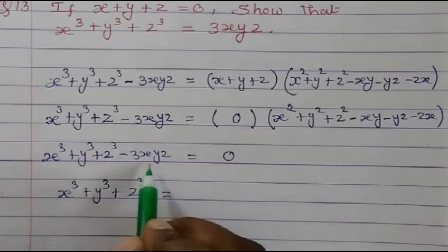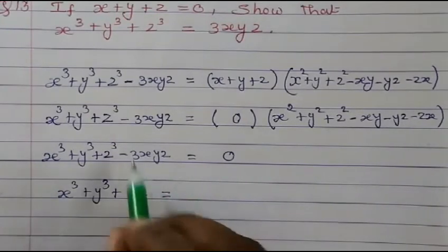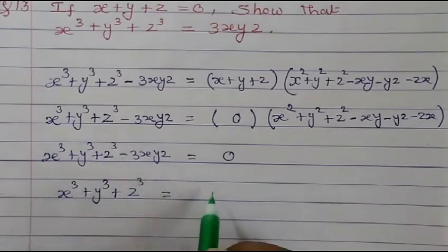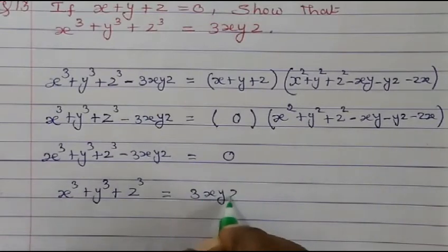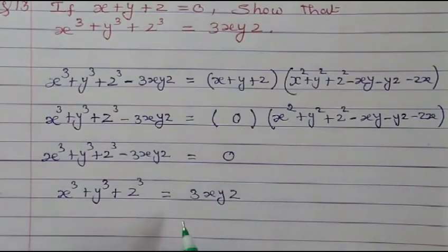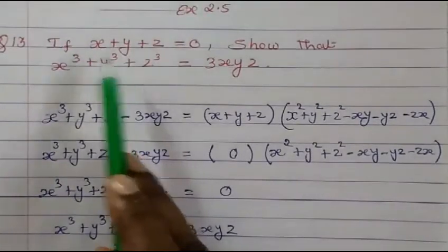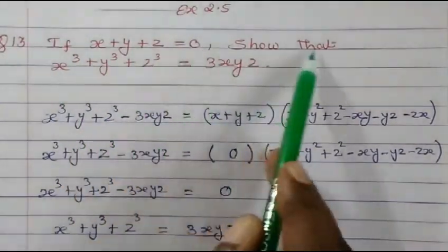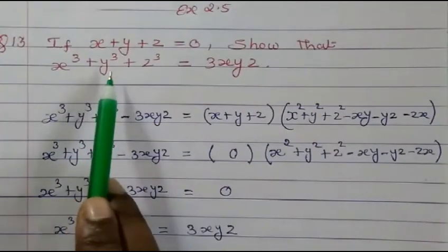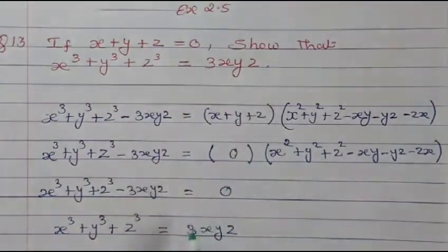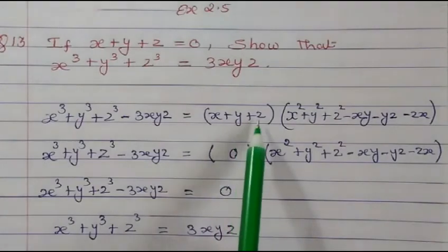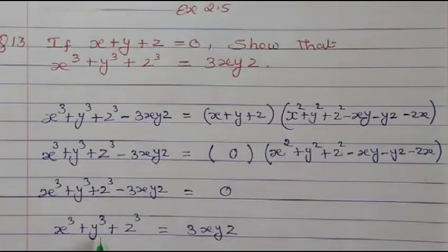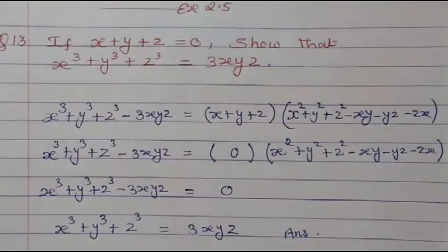Now this minus 3xyz, let's bring it to the right side. Since it is minus on the left, when it moves to the right it becomes plus 3xyz. So we have proved that if x plus y plus z equals 0, then x cube plus y cube plus z cube is equal to 3xyz. That's our answer. Thank you and God bless you.